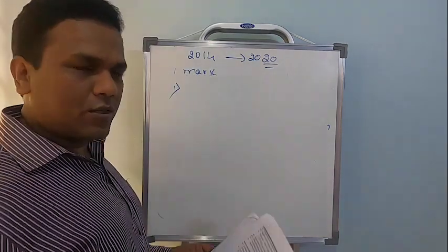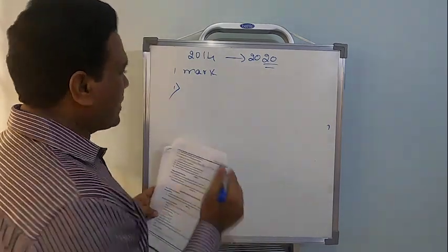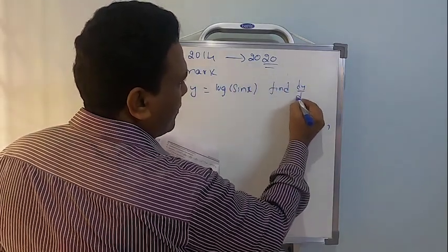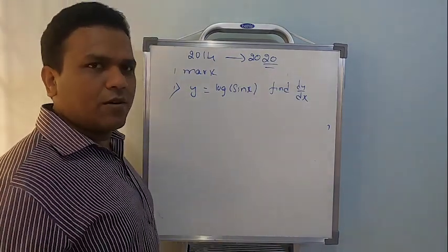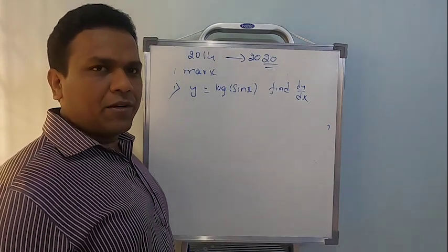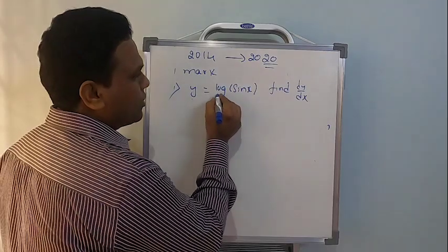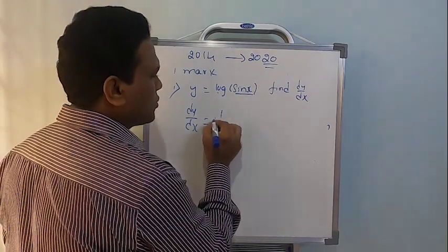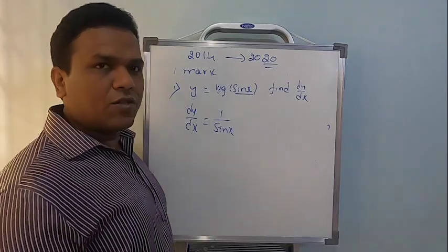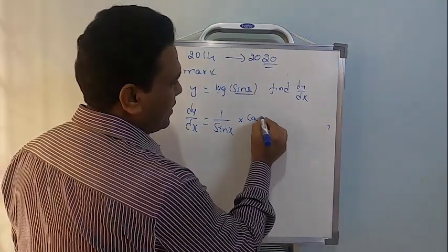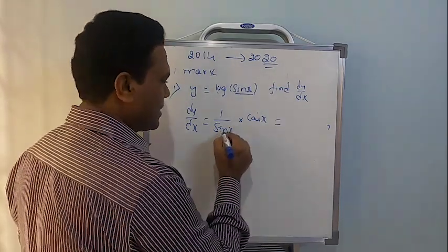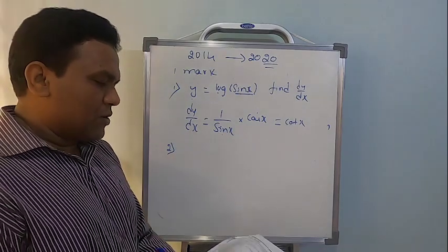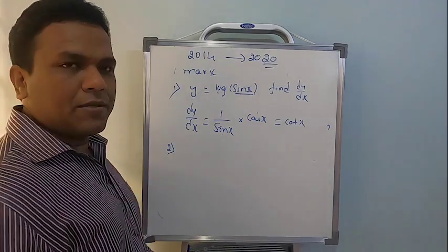For one mark in 2014, the problem given was: if y = log(sin x), find dy/dx. This is a chain rule problem. Differentiating: dy/dx = (1/sinx) × cosx = cotx. A chain rule problem will always appear in one mark — it is compulsory.